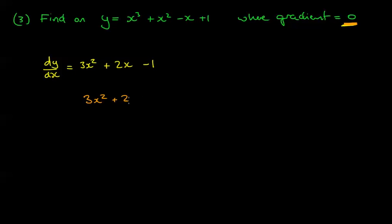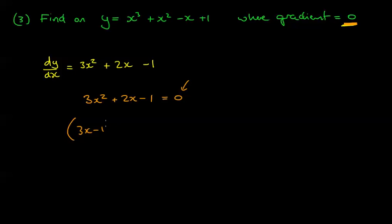This is a quadratic, and you can use the quadratic formula, complete the square, or factorize. Factorizing gives (3x − 1)(x + 1) = 0. If you're unsure how to do that, practice your quadratic skills.